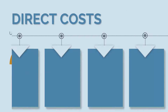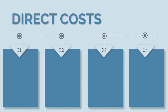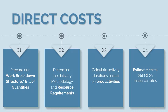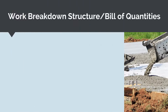The process we follow to calculate direct costs is as follows. First, we need to prepare our work breakdown structure and bill of quantities. Next, for each activity in our WBS, we need to understand exactly how we are going to complete that construction activity and what resources are required. Then, based on productivity rates and the quantum of work from our bill of quantities, we can estimate the activity duration. And from our base resource costs, we can then calculate our resource rates. The first step is to prepare our work breakdown structure and bill of quantities.